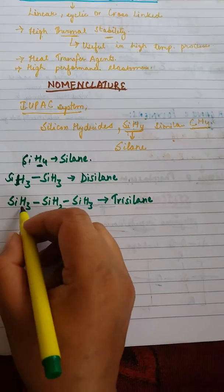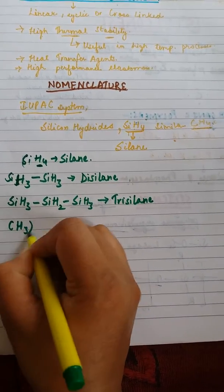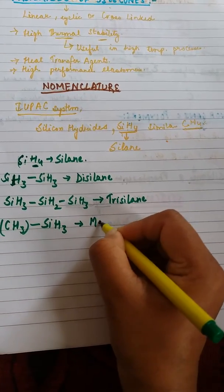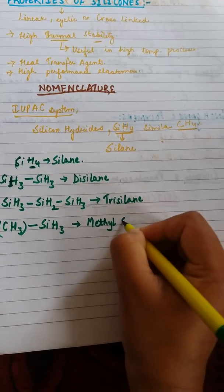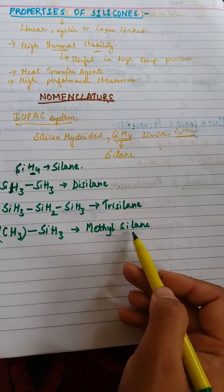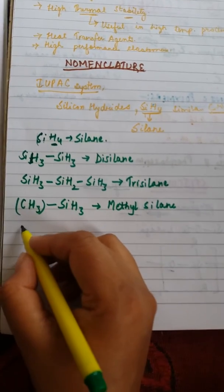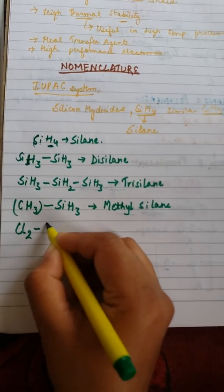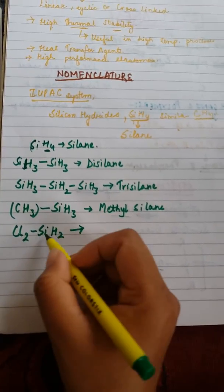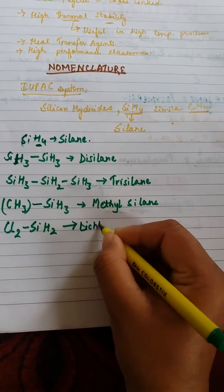When hydrogen is replaced by a side group such as a methyl group, we first write the name of the side group and then the backbone silane — so it becomes methylsilane. Similarly, if two chlorine atoms are attached to the silicon (since silicon has a valency of four), its name will be dichlorosilane.